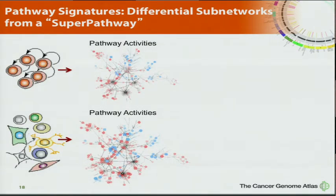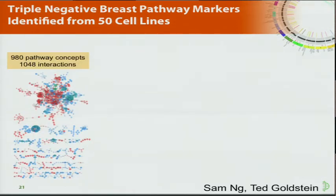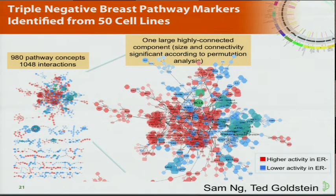Another type of analysis with pathways: we can take two groups of samples or patients and look for markers of one subtype versus another, then hone in on subnetworks that are markers for a particular cohort. We're working on this for the luminal-basal comparison in breast cancer. Blue is more active in luminal — you can see the expected ER signaling pathways — and then there are some intriguing proliferative pathways for basal shown in red, like HIF-1 alpha.